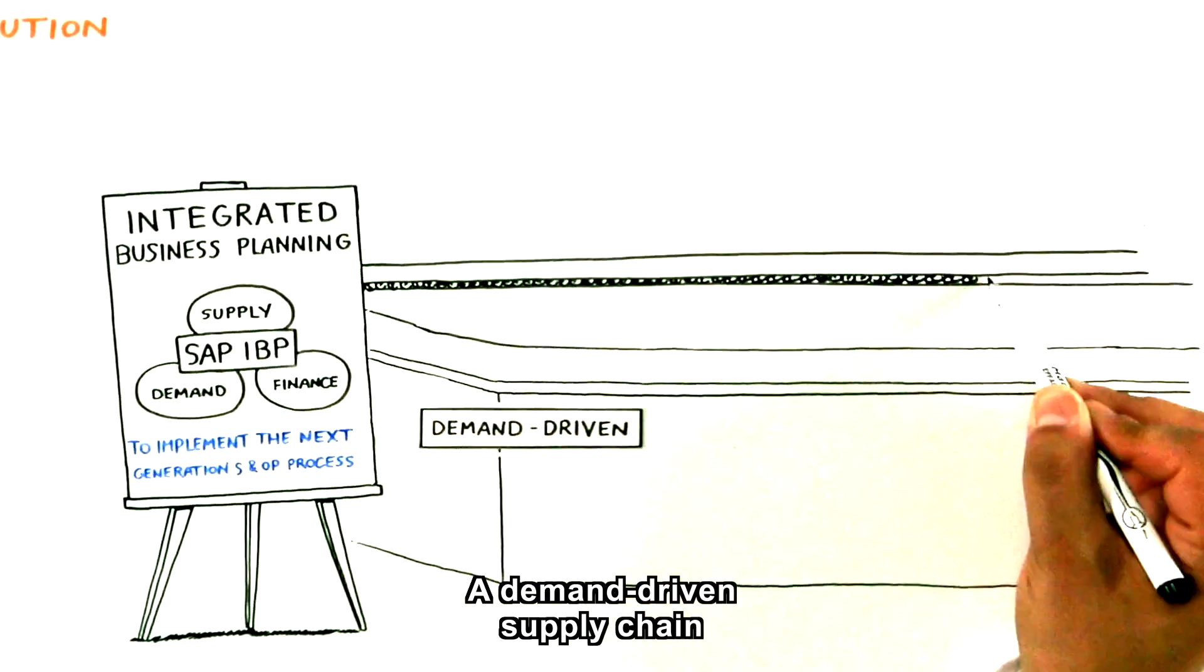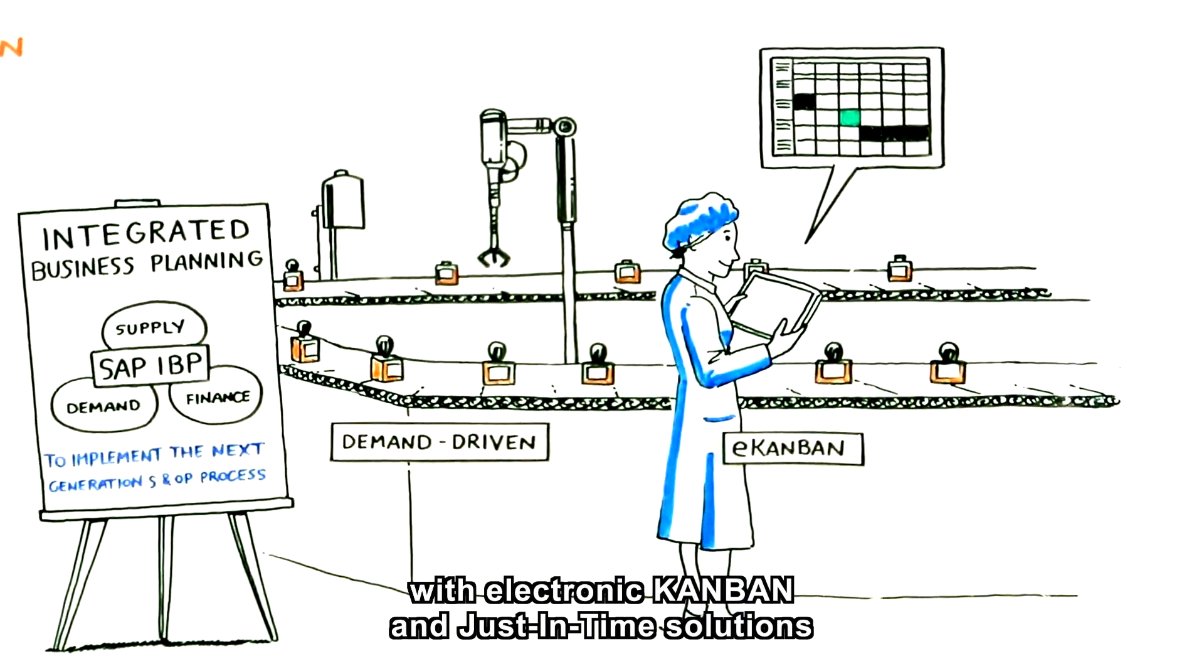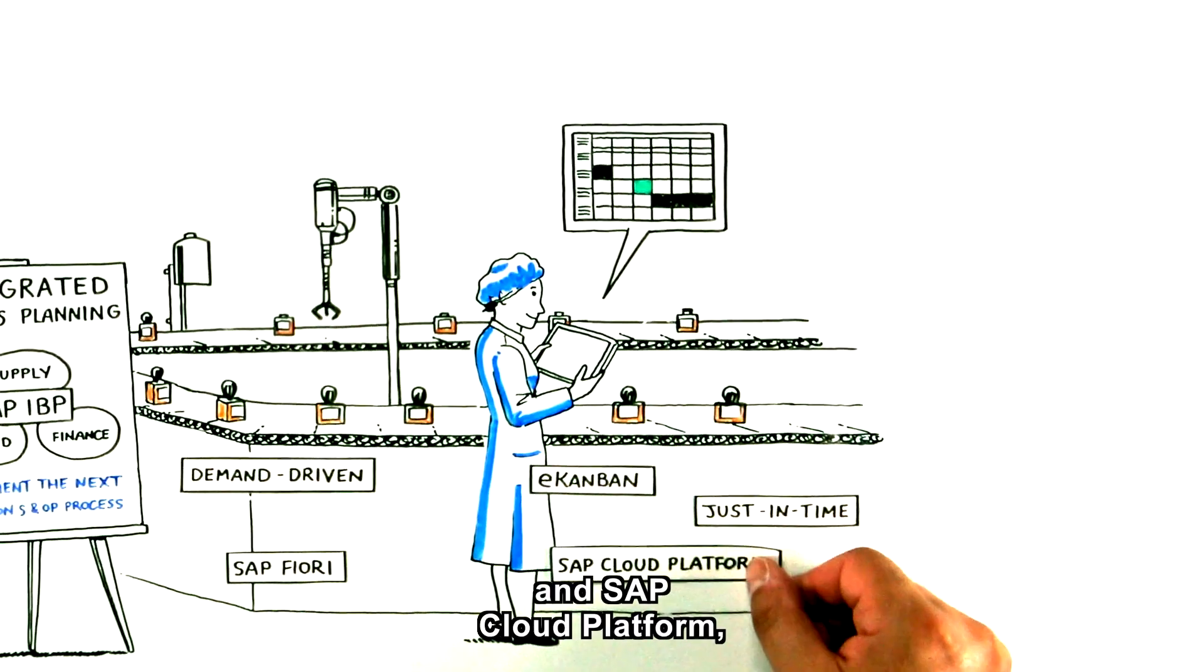A demand-driven supply chain orchestrated digitally, with electronic Kanban and just-in-time solutions, designed on SAP Fiori and SAP Cloud Platform.